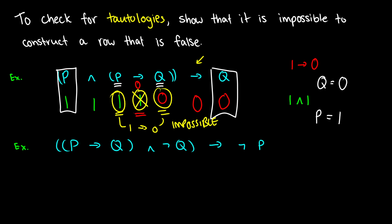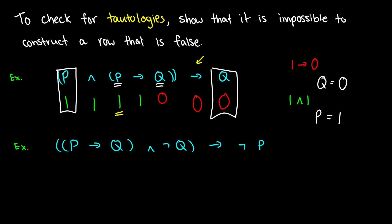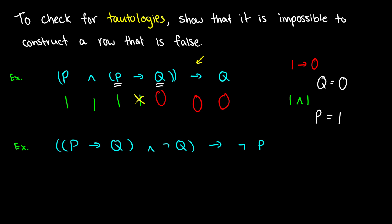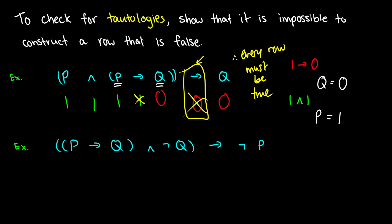It's impossible to have this conditional be true but to also have p be true and q be false. Therefore, because we found that it is impossible, it is impossible to construct this row. Because we have an impossibility here, we know that it is impossible at all to have this initial assignment. So that is an impossible assignment. It is impossible for a row to be false. Therefore, every row must be true, and therefore this formula is a tautology.